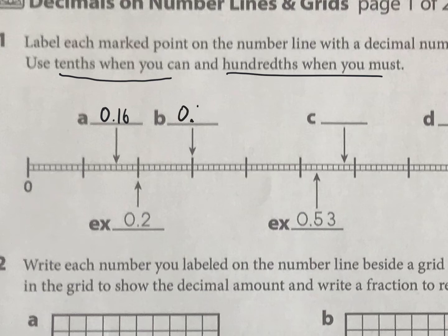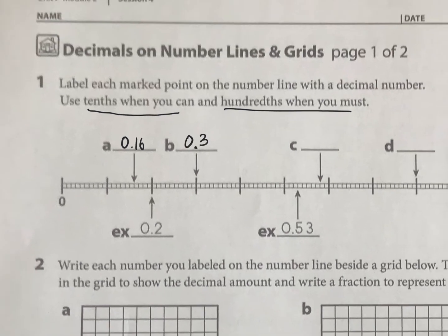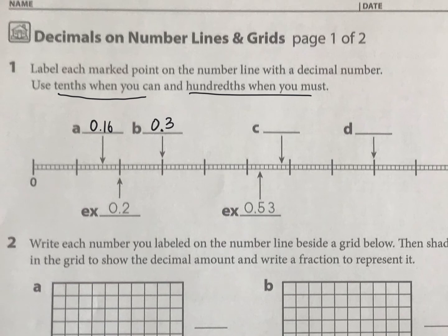And I think you can figure out the rest on your own there. C would be a hundredth and D would be a tenth, right?